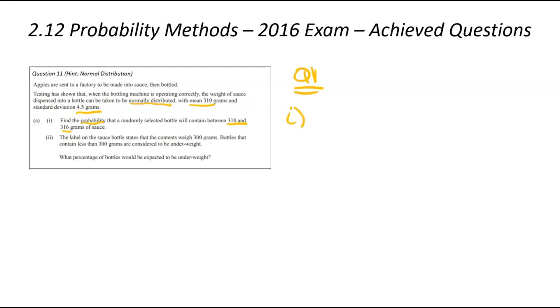Find the probability that a randomly selected bottle will contain between 310 and 316 grams of sauce. Looking at I, let's draw our normal distribution curve. We had a mean of 310 given to us in the question with a standard deviation of 4.5. We're curious about 310 to 316. So, that shaded part there, that's the portion, that's the area we're interested in. We now jump into our calculator. We need those four inputs. The first input you need to think about is what's my lowest part of that shaded area. That's going to be 310. What's the upper part going to be? That there is going to be 316.